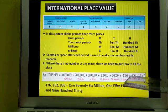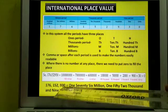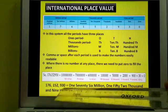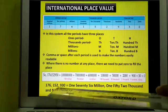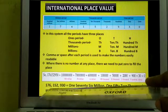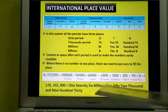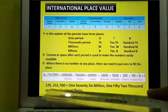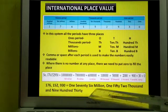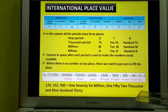This is the expanded form, same as the Indian system. Now how will you write the numerals - the number in figures? Here also you divide the numbers into periods. Before 930 put a comma, then before 152 put another comma. So 930 is the ones period, 152 is the thousands period, and 176 is the millions period. When writing the number, you write 176 million, 152 thousand, nine hundred thirty.